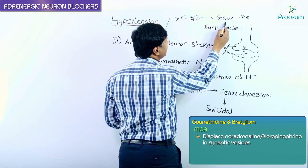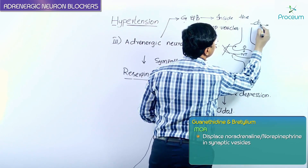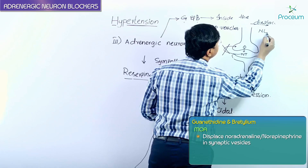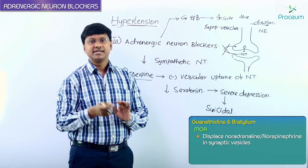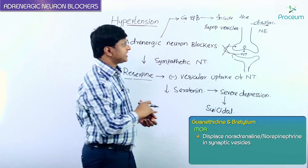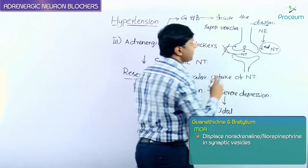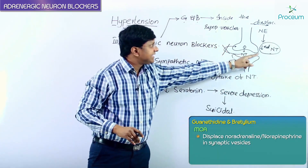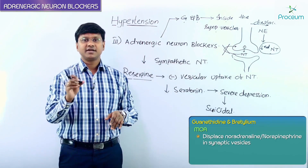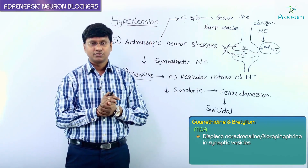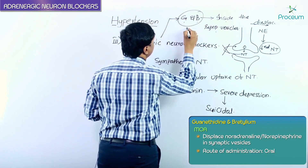Guanethidine and bretylium, once taken up inside the synaptic vesicles, displace the noradrenaline or norepinephrine present within the vesicles, resulting in decreased neurotransmission. With decreased release of norepinephrine, there is decreased vasoconstriction, and thereby these drugs have an antihypertensive effect. Both guanethidine and bretylium are given orally.